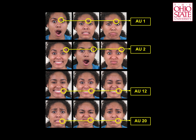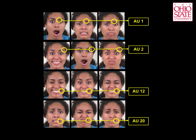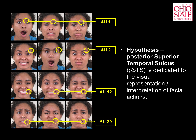Our hypothesis is that to visually interpret facial expressions, our brain must solve the inverse problem. That is, our brain must identify which action units are active in a face. Specifically, we hypothesize that the brain region where this visual recognition takes place is the posterior superior temporal sulcus, or PSDS, which is thought to increase its neural activity when we observe biological movements.